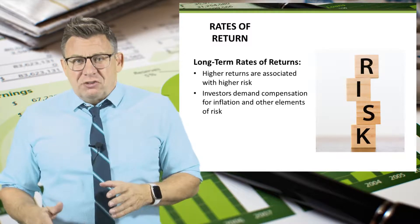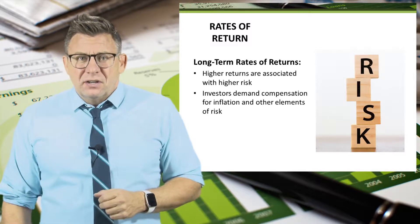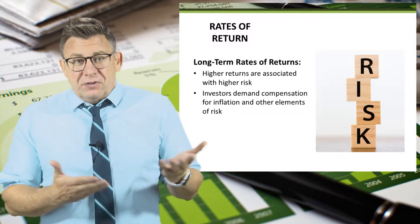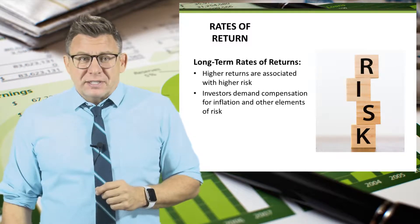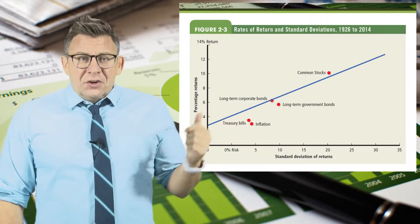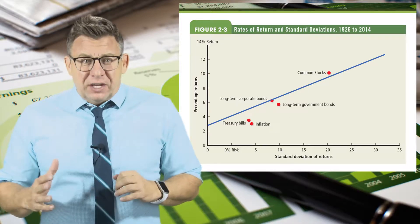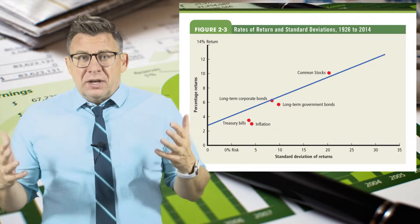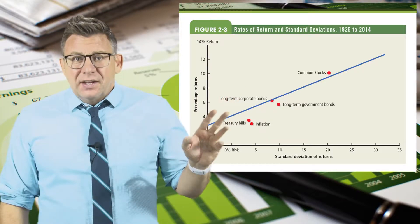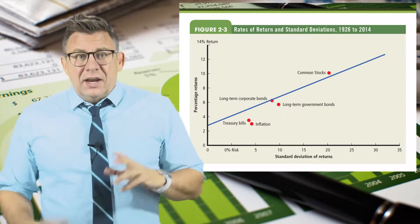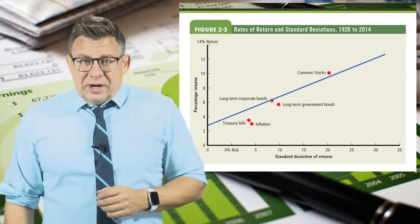Investors demand compensation for inflation and other elements of risk. Without compensation for these risks, investors would choose risk-free investments. The graph shows the rate of return and standard deviations of returns for common investment vehicles. The further to the right, the more risk, and thus the higher the required rate of return.